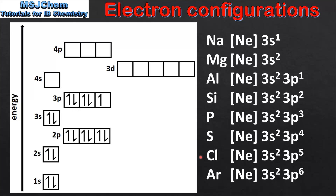Moving on to chlorine which is Ne3s2 3p5. And finally at the end of period 3 we have the noble gas argon, which has the electron configuration Ne3s2 3p6, and we have now completed the 3p sub level.